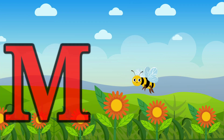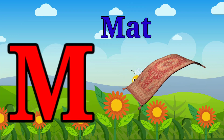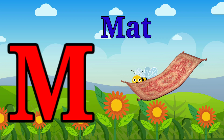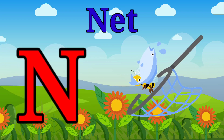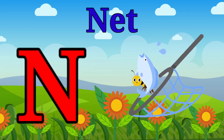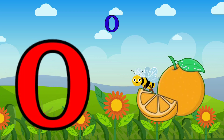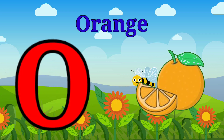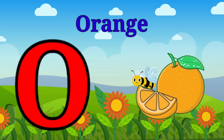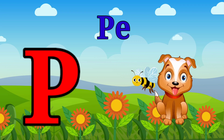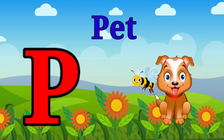M is for mat, m-m-mat. N is for net, n-n-net. O is for orange, o-o-orange. P is for pet, p-p-pet.